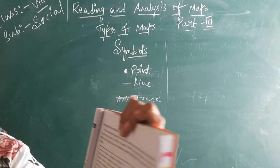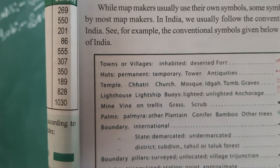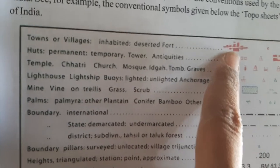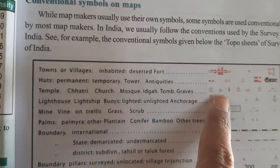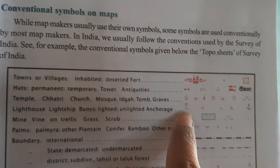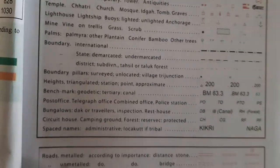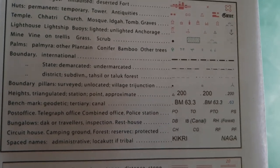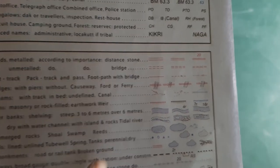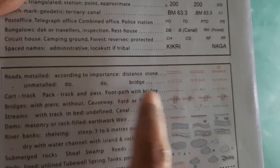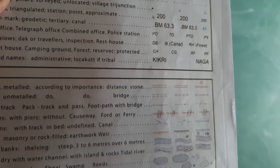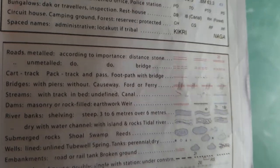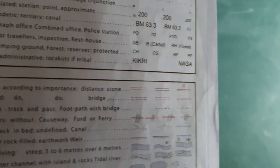Here you can see the Survey of India symbols. Towns and villages — that is inhabited, deserted, fort — for the fort, symbols are marked in this way. Next, earth symbols, temple in this way. Next is lighthouse or lightship — we will mark in this way. These are known as conventional symbols. On the roads we can see these symbols. Next, bridge symbols, dam symbols, turning boats, submerged rocks, mineral lines, contour lines, sand features — all these are known as conventional symbols.